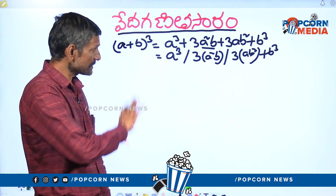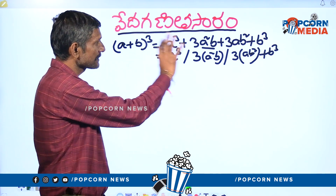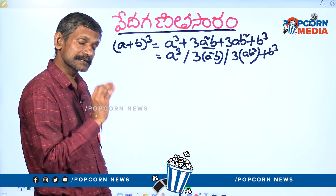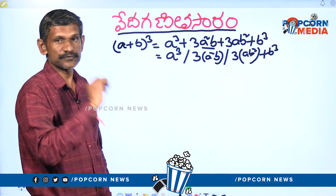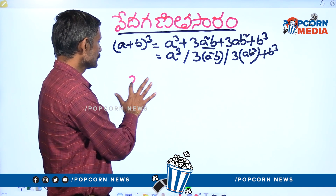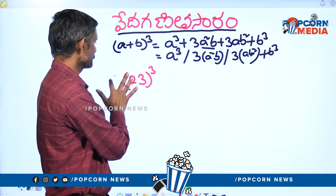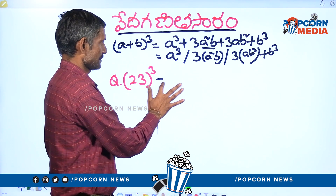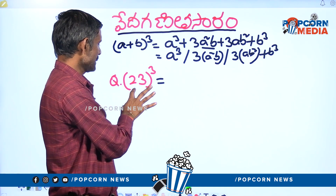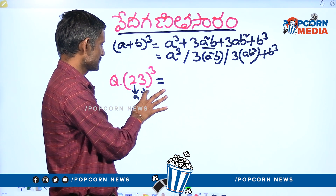Do you remember the whole cube? Simple. The whole cube is just like this. Let's make a small cube. Suppose, 2 plus 3, whole cube. We have a cube — here is a cube, here is b.